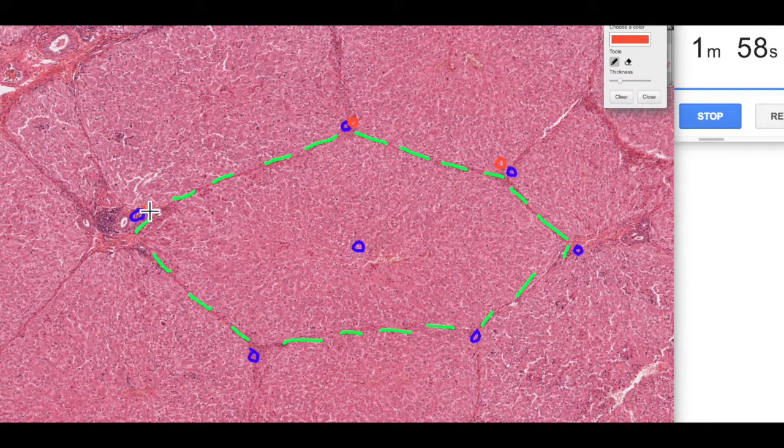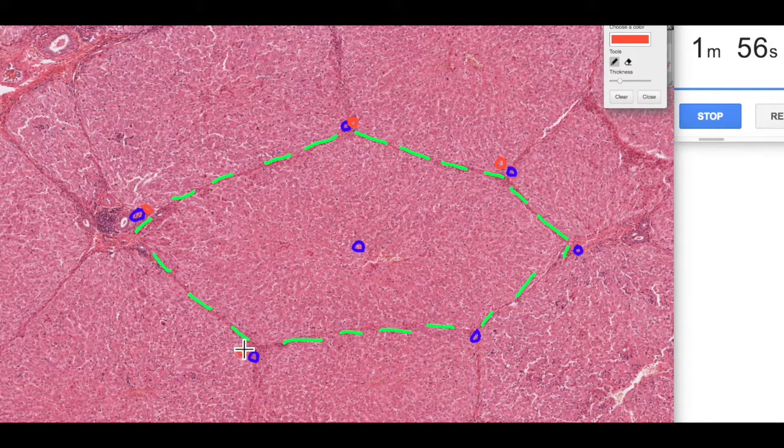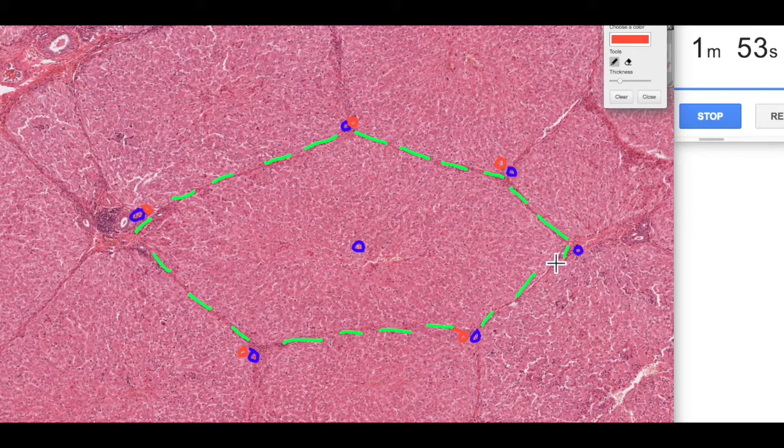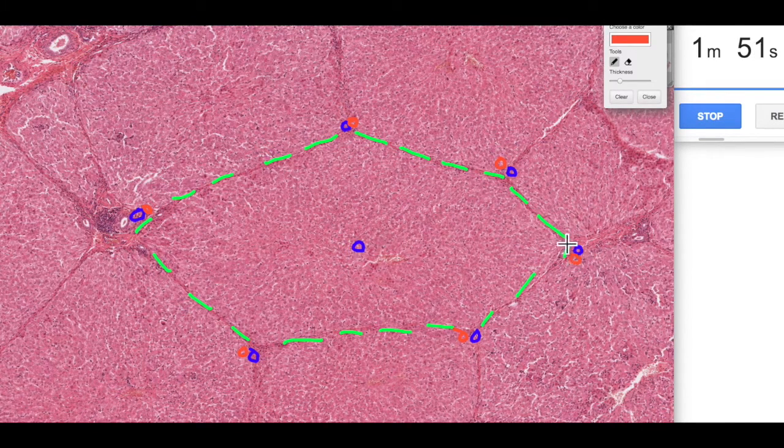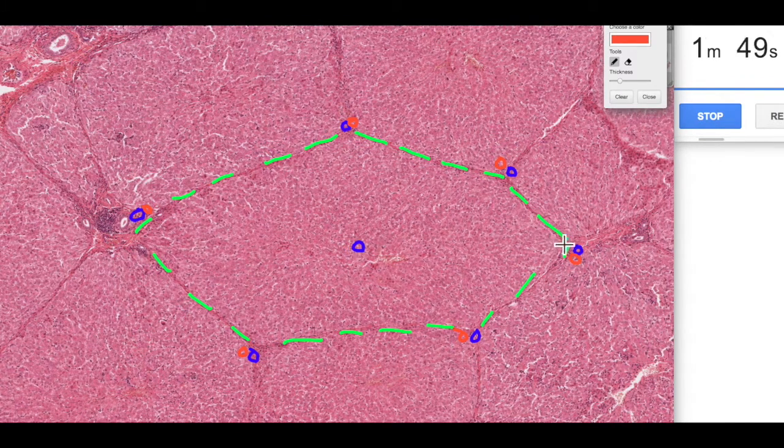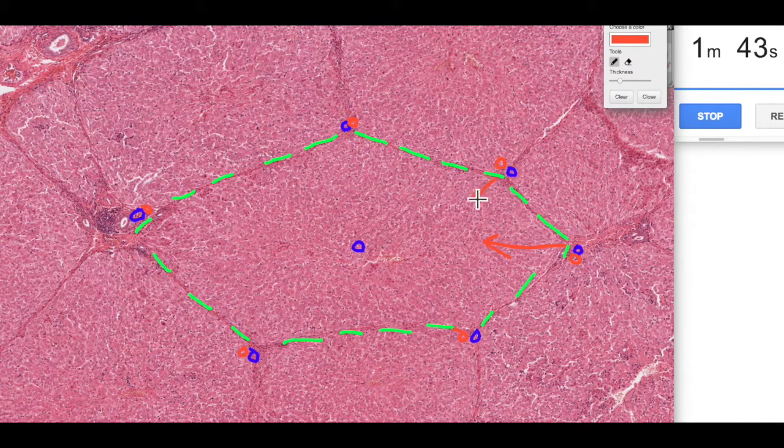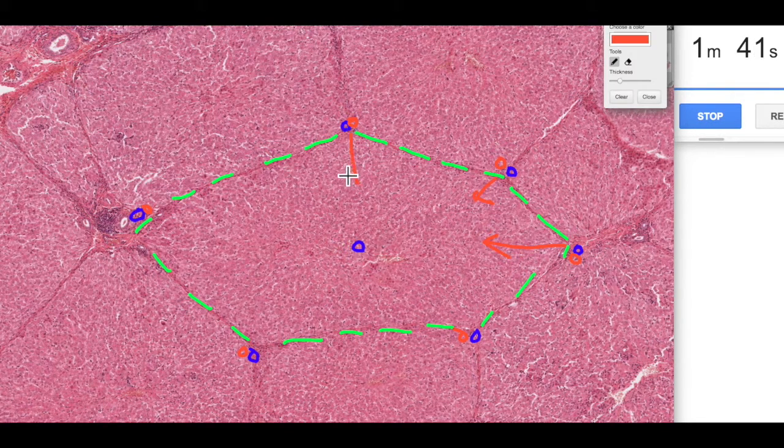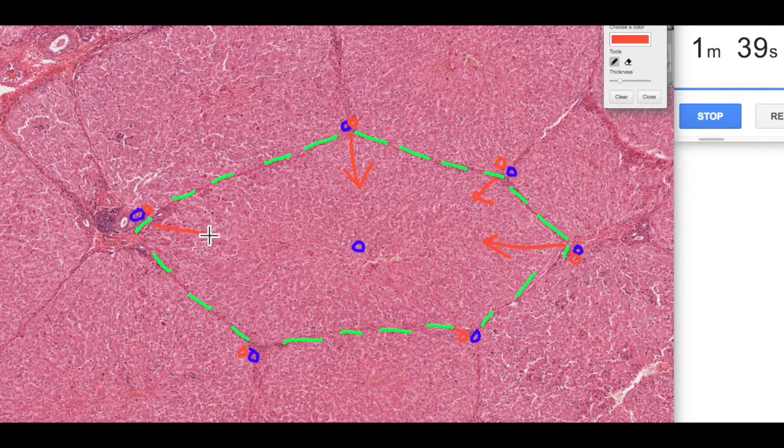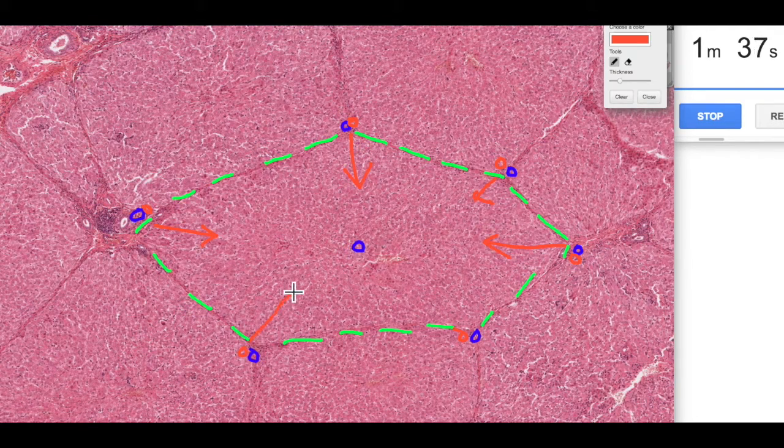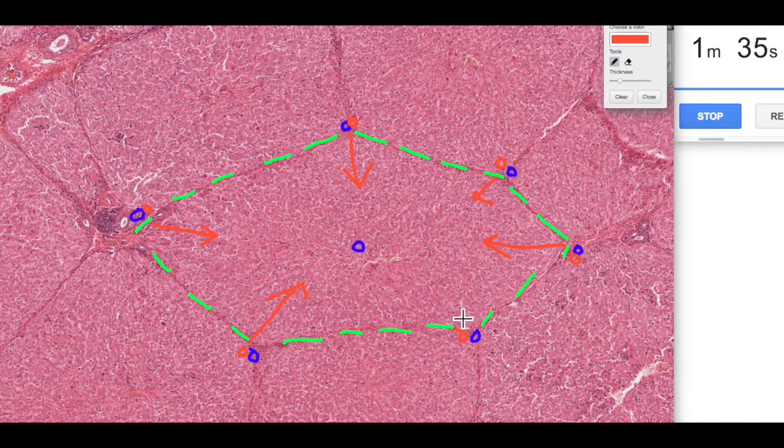They exist within the same portal regions, the portal triads. The idea being that the blood supply pools for that dual blood supply and then eventually drains into this central vein, all percolating through these liver sinusoids and eventually draining into our central vein here.